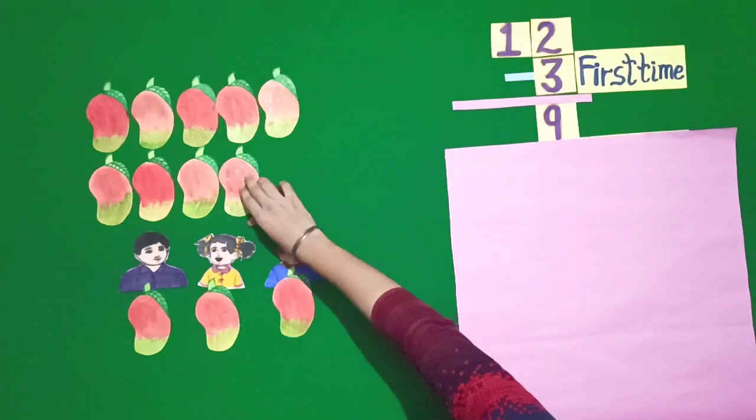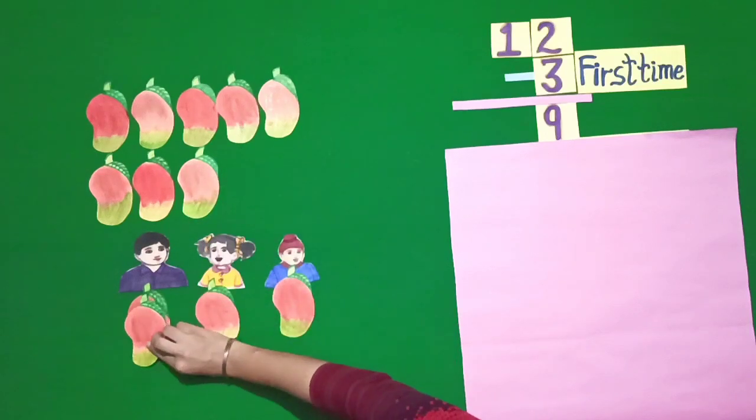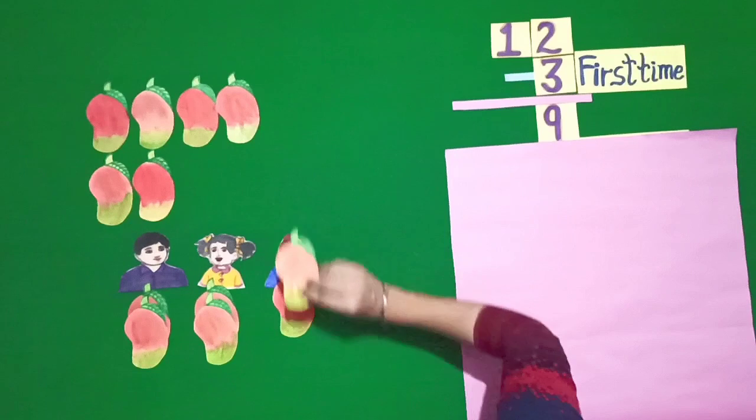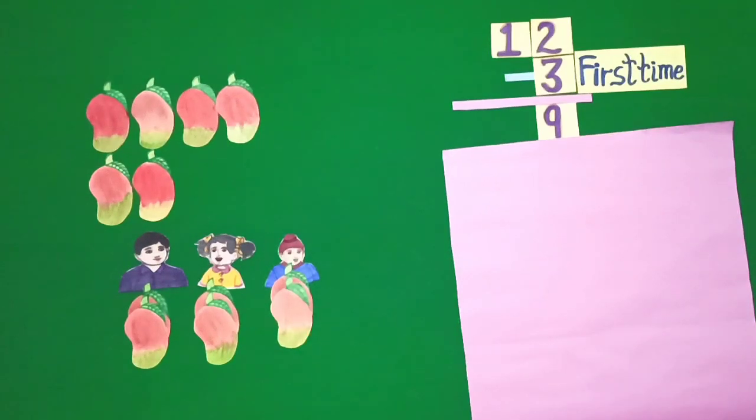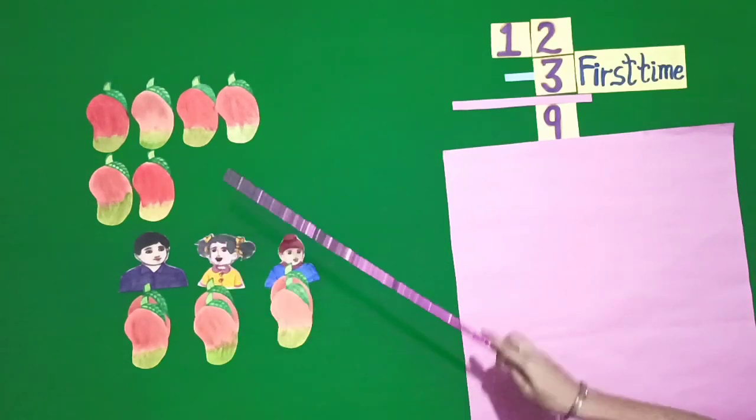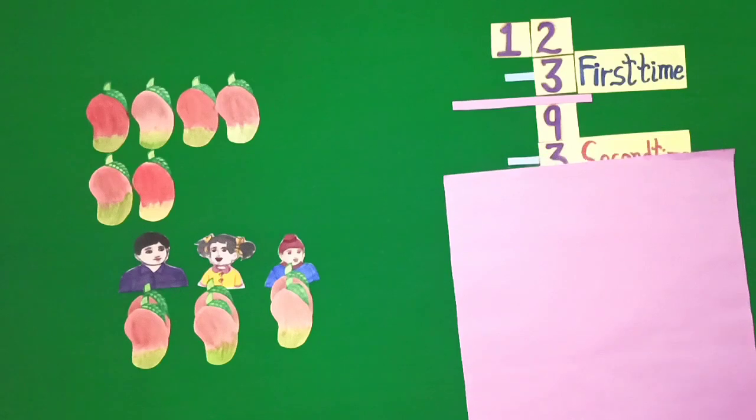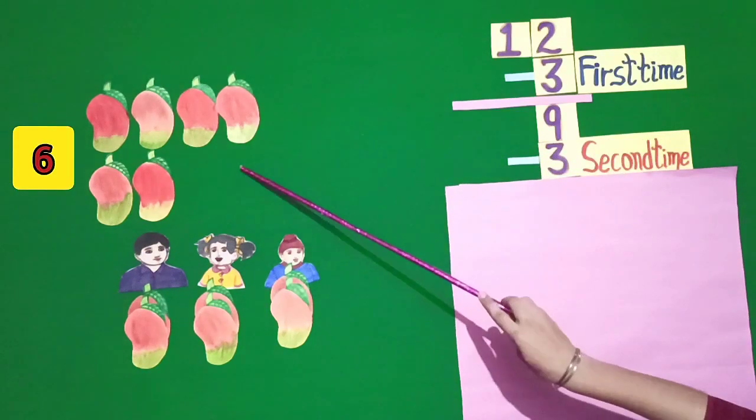Now, I give 1 mango to Aman, 1 mango to Harman and 1 mango to Raman. Students, second time out of 9 mangoes, give 1 mango to each child, we are left with 6 mangoes.